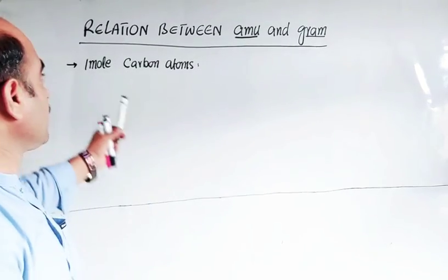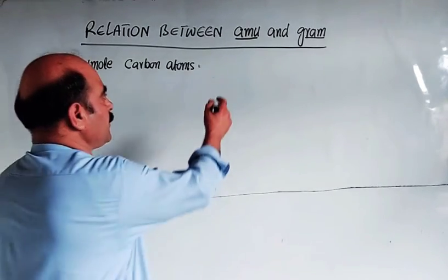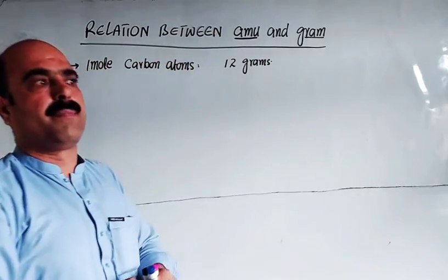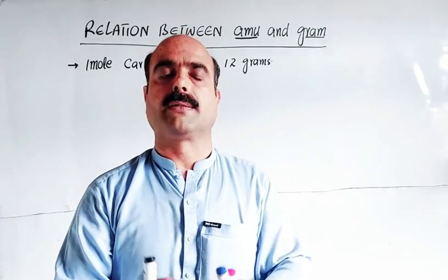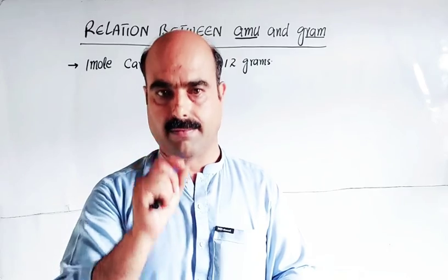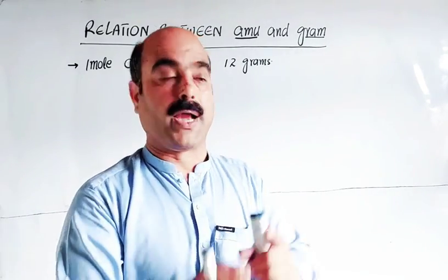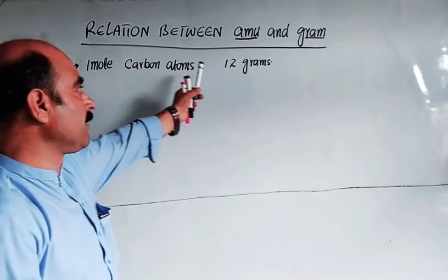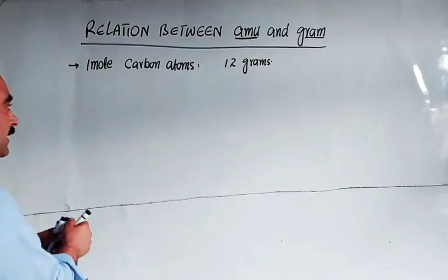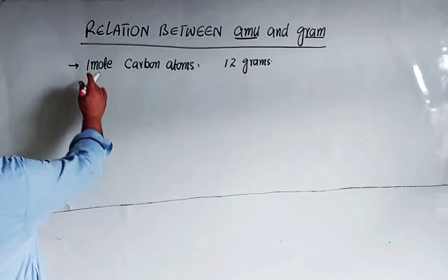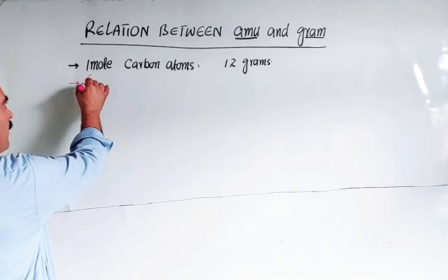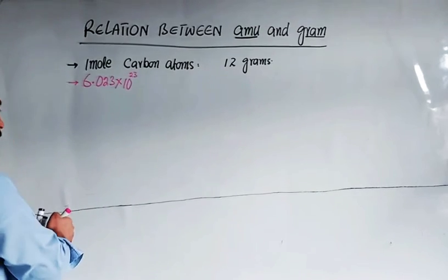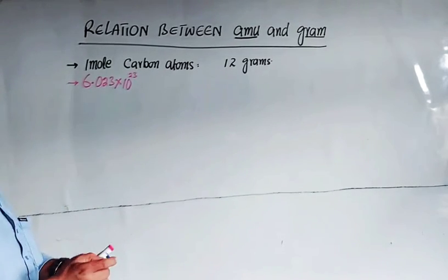One mole of carbon, the mass is 12 grams as I explained in the previous video. One mole of carbon atoms means 6.023 × 10^23 carbon atoms. This constant number was practically determined and calculated by Avogadro, so it is called Avogadro's number.